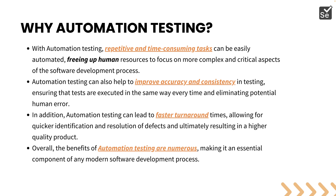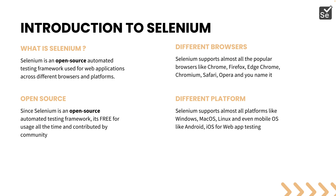There are so many benefits of automation testing, and we'll be covering all of them in this series. We are going to focus on web automation testing, which is why we have chosen Selenium. So what is Selenium? Selenium is an open source automated testing framework used for web applications across different browsers and platforms. Being open source means it is free to use and contributed to by hundreds and thousands of community members — which means we can use it in test, development, and production environments without any problem.